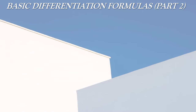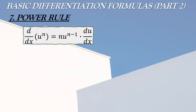Ipapagpatuloy na natin ang basic differentiation formulas. Sa nakaraang video tutorial itinuro ko ang unang anim na formula, so ngayon ipapagpatuloy natin using the 7th rule which is the power rule. In the power rule gagamitin natin ang formula na ito, with the condition na ang n must not be equal to 1, dahil kapag 1 ang n ang magiging exponent ng solution will be 0.